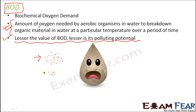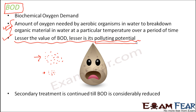Lesser the value of BOD, lesser is the polluting potential of water — that is, the ability to cause pollution. When the value of BOD becomes very less and is considerably reduced, we say that secondary treatment can be stopped. We should know exactly where to stop secondary treatment. Microorganisms are minute organisms we cannot see, but the oxygen present in the water can be measured. Once we can measure that, if the value of BOD has become very less, that means very small amount of organic matter is now present in that water, so we can stop the secondary treatment.